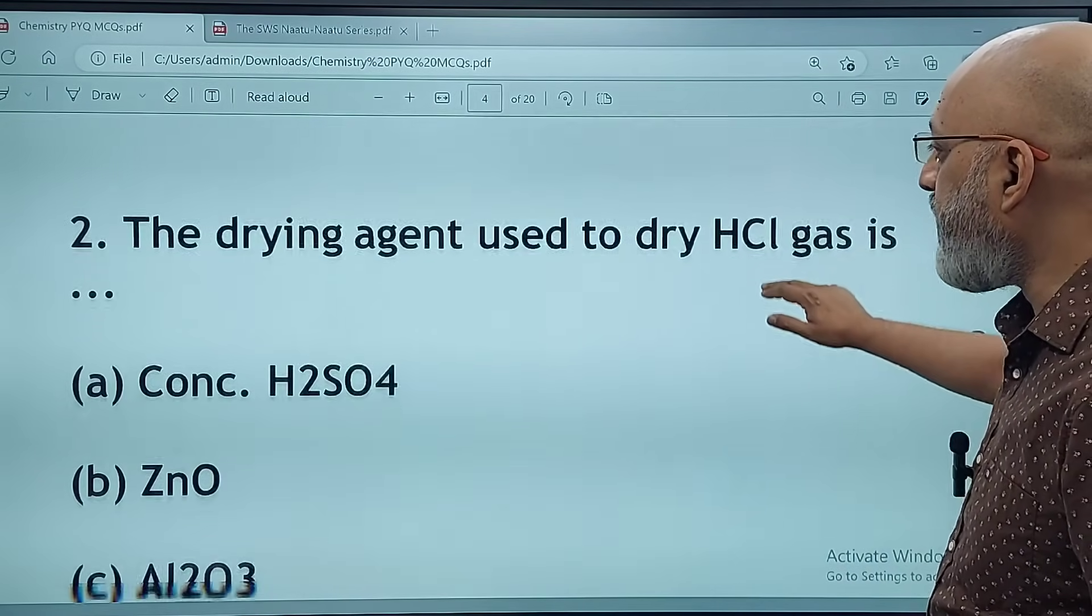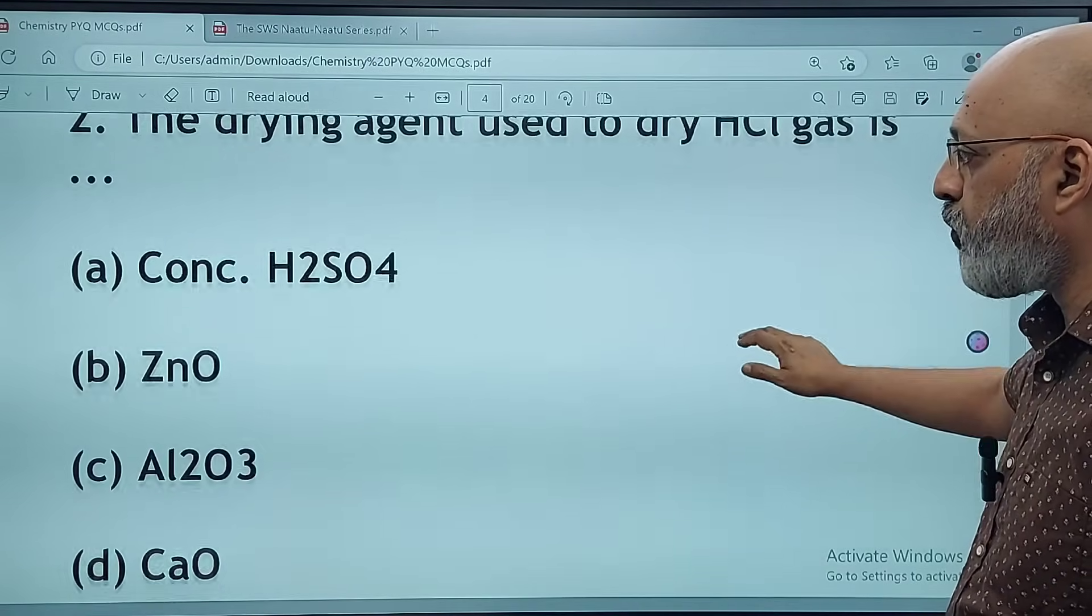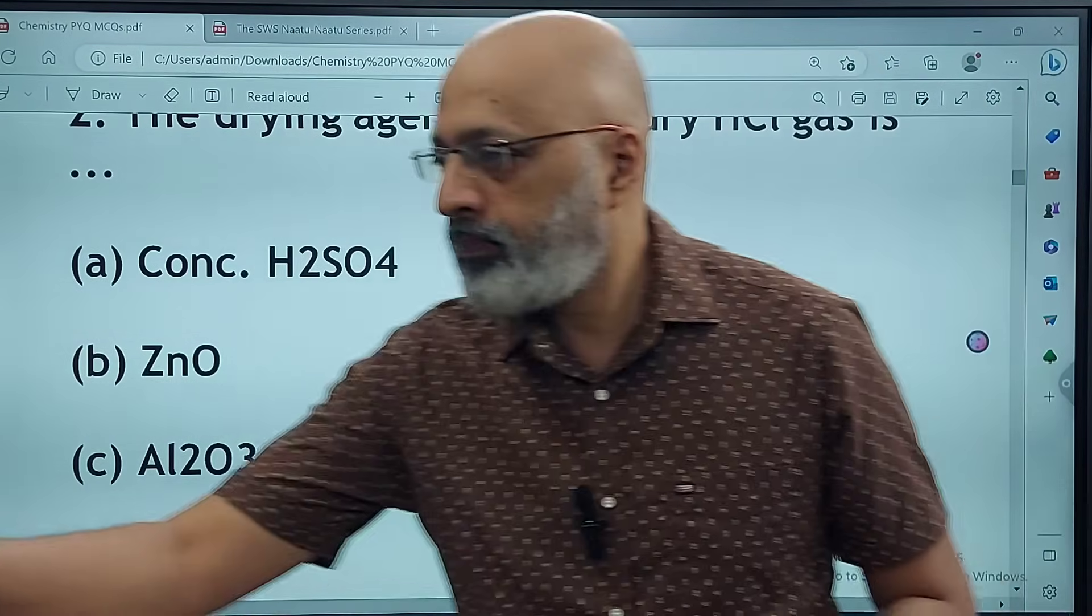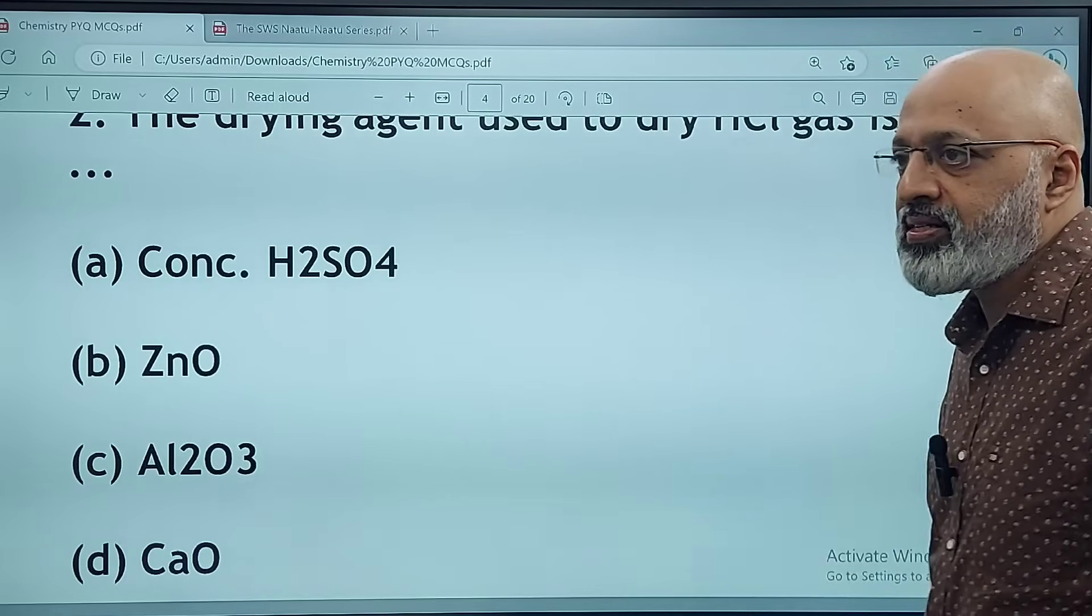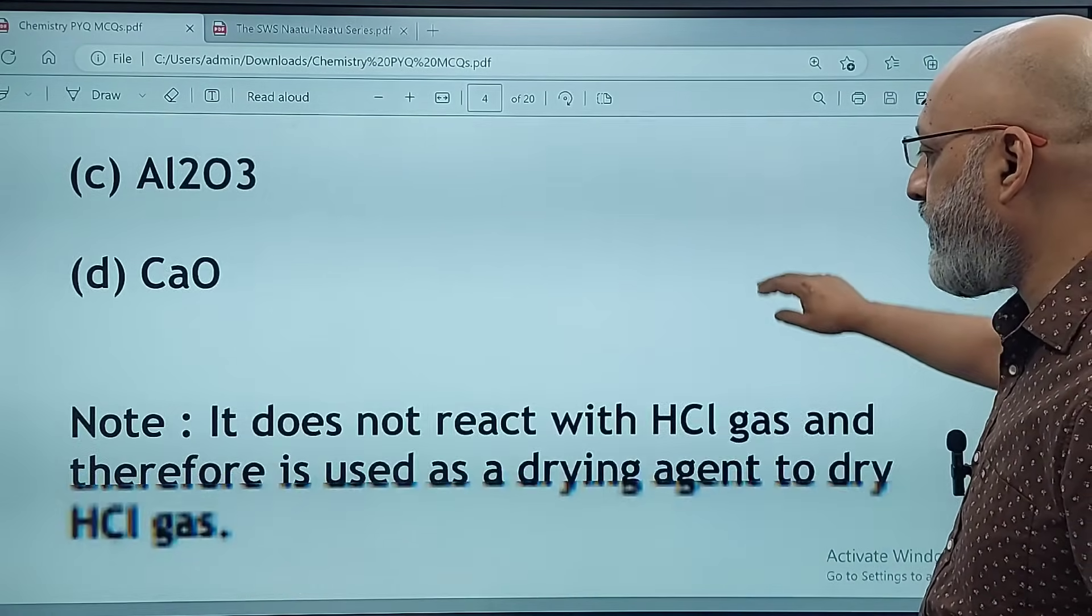The drying agent used to dry HCl gas is concentrated H2SO4, zinc oxide, Al2O3, or CaO. The correct answer is concentrated sulfuric acid. It does not react with hydrochloric gas and therefore is used as a drying agent.